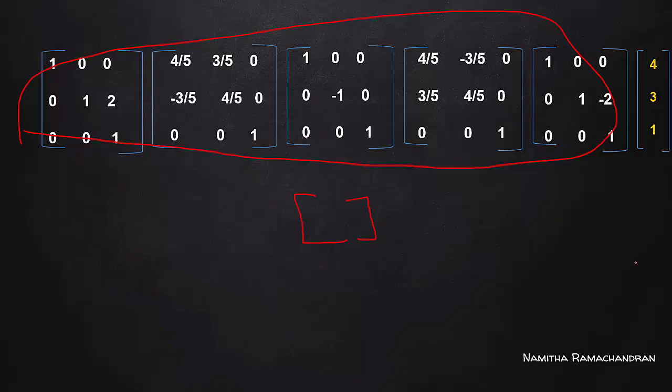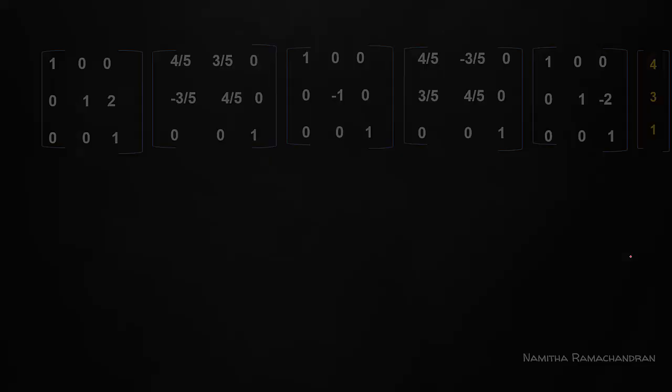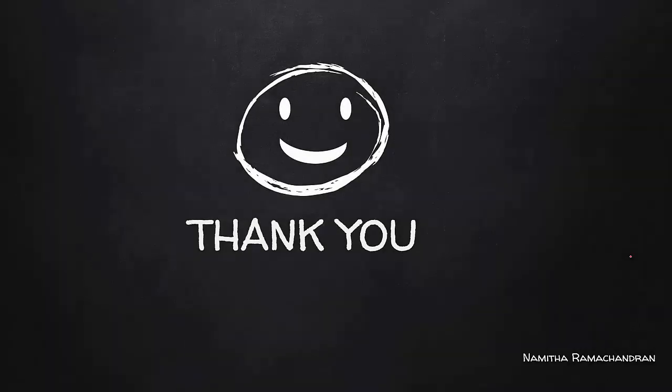So this is the reflection with respect to an arbitrary line — an example of composite transformations in detail. Thank you.